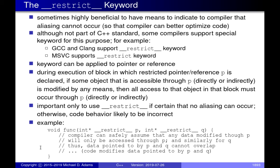We want to signal this to the compiler so that when it's generating code for the function, it can determine that it's safe — no aliasing — and therefore make optimizations that otherwise wouldn't have been safe. The way we accomplish this is using a keyword called `restrict`, supported by a number of compilers. Unfortunately this is not part of the C++ standard, so it's somewhat of a non-portable construct.